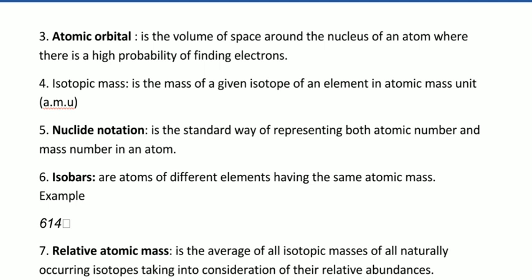Isotopic mass is the mass of a given isotope of an element in a.m.u. As we discussed, isotopes are atoms of the same element but they have different masses due to a different number of neutrons. Isotopic mass is written in atomic mass units. When we are calculating relative atomic mass, we are using isotopic masses and their percentage or relative abundances to calculate the relative atomic number. Nuclide notation is the standard way of representing both atomic number and mass number in an atom.